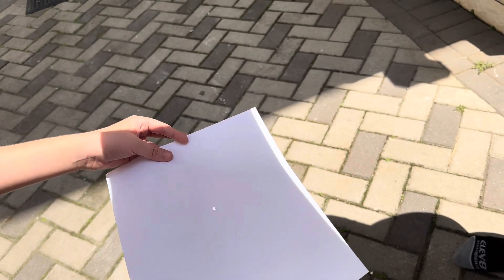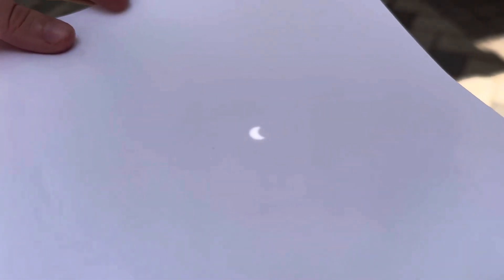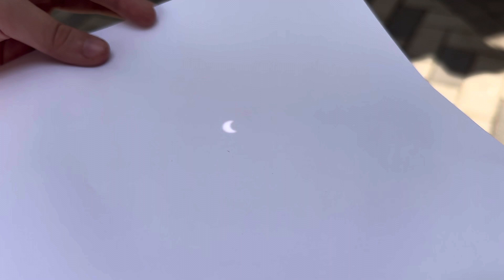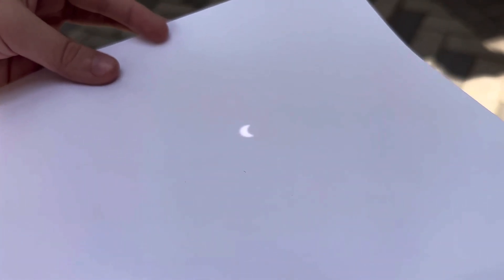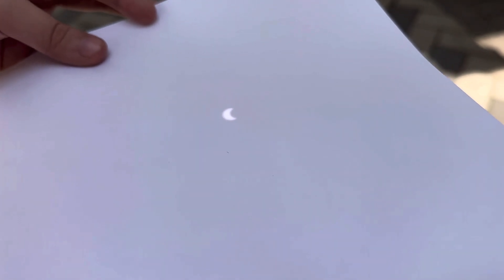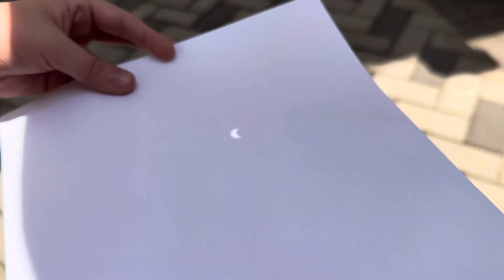The more you hold it away, the bigger it gets, but the image also gets fainter. You can see the moon going in front of the sun - this is happening right now. Over the next 45 minutes it's going to go to 88 percent here in San Jose, Costa Rica.